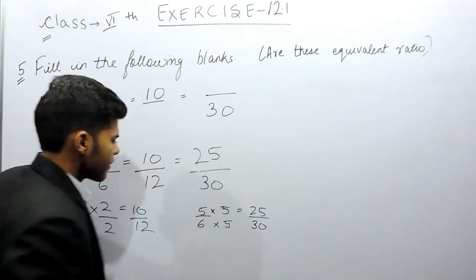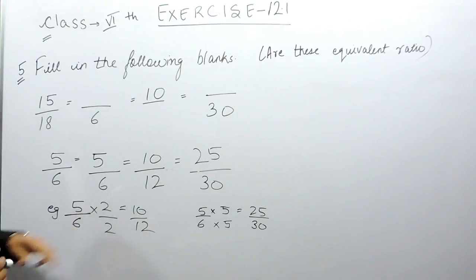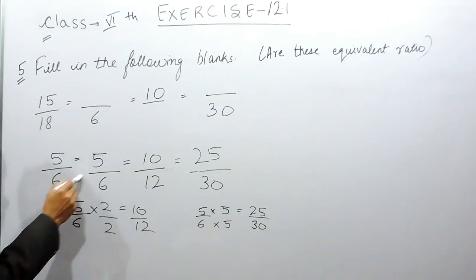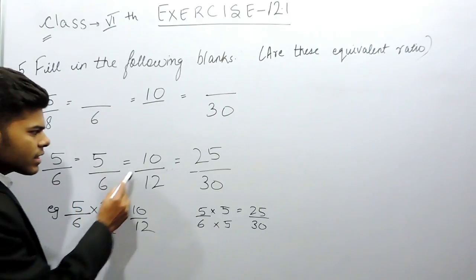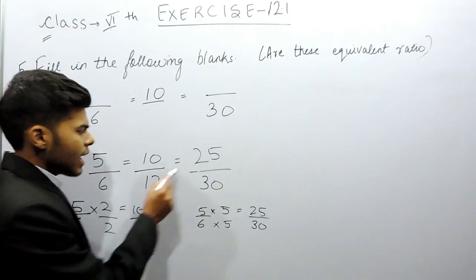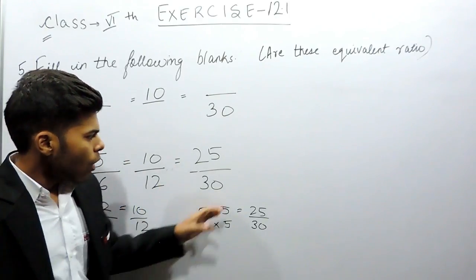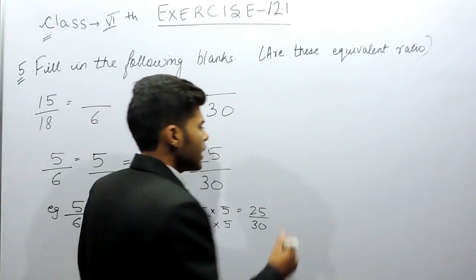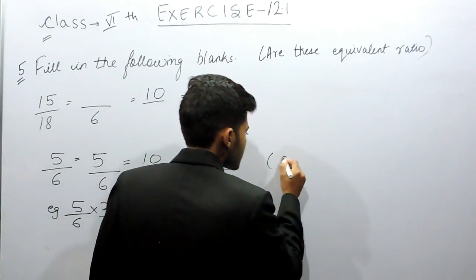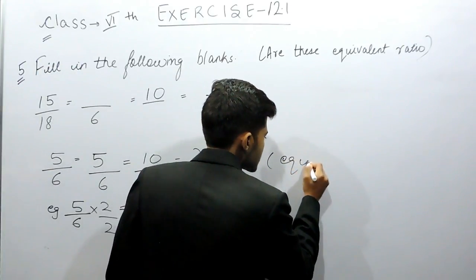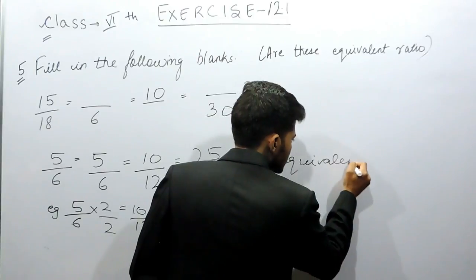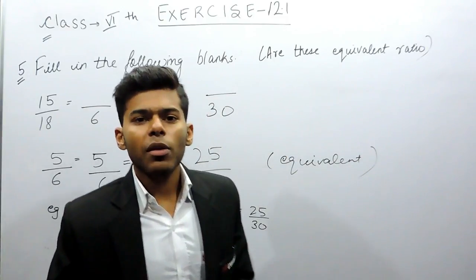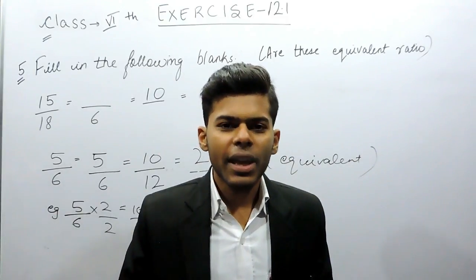In the denominator we got thirty, so in the numerator it will be twenty-five. Now if you bring them all to simplest form, it is five upon six, five upon six, five upon six, and five upon six — all of them are equal. That means they are equivalent ratios. This is how we can solve this question. Thank you.